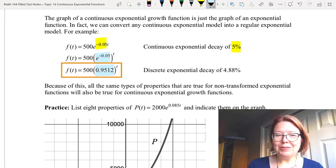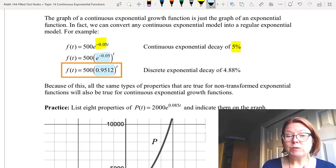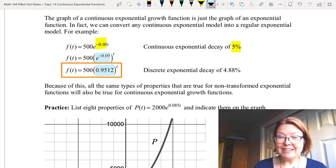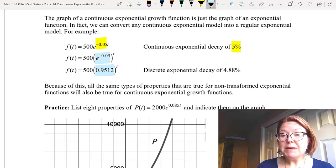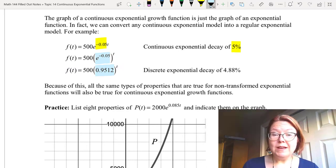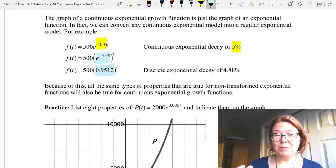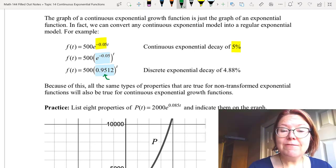So now our model is f(t) equals 500 times 0.9512 to the t power. This means that we actually do know the decay rate if this was a discrete exponential model. The number 0.9512 is the same as one plus r.